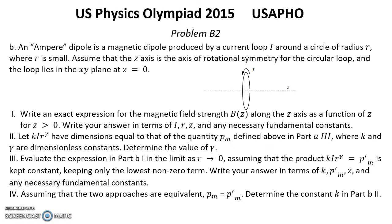Part B: An Ampere dipole is a magnetic dipole produced by a current loop I around a circle of radius R, where R is small. Assume that the Z axis is the axis of rotational symmetry for the circular loop, and the loop lies in the XY plane at z = 0.